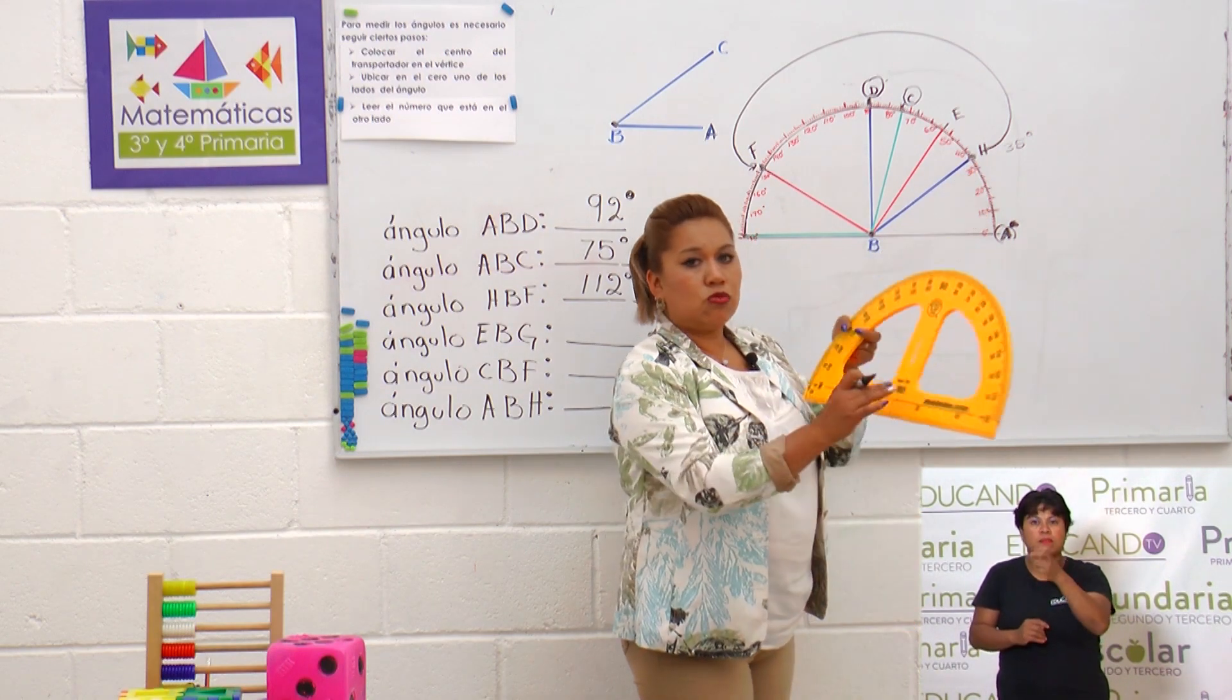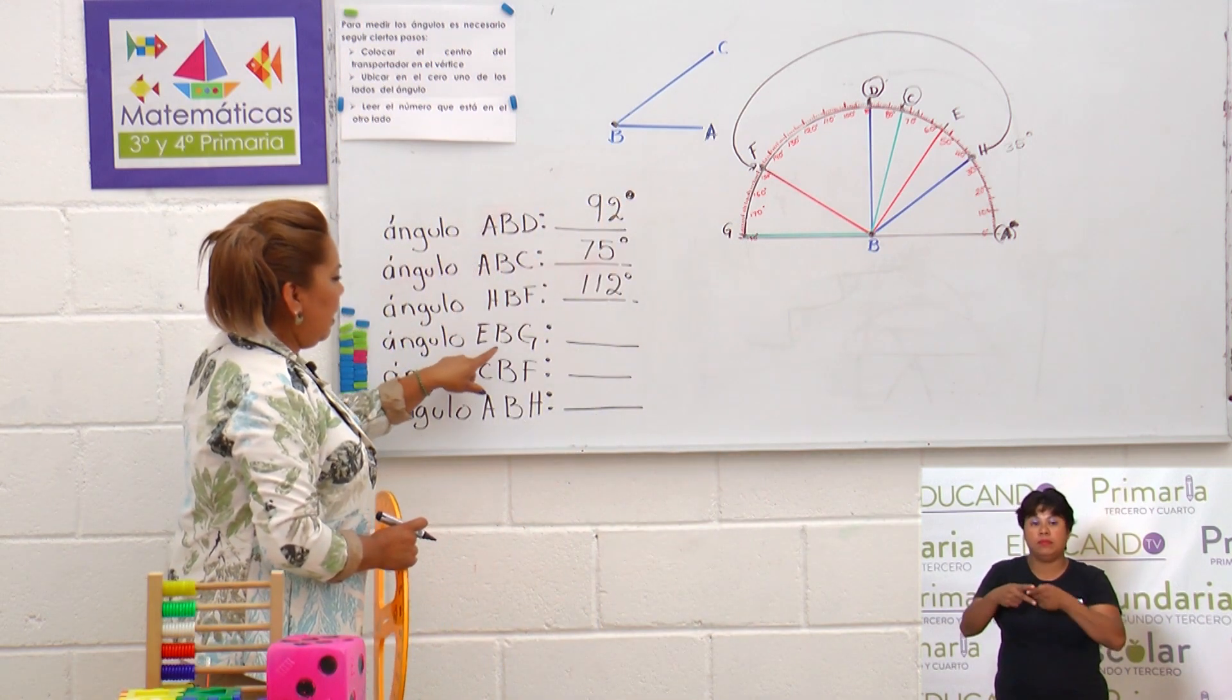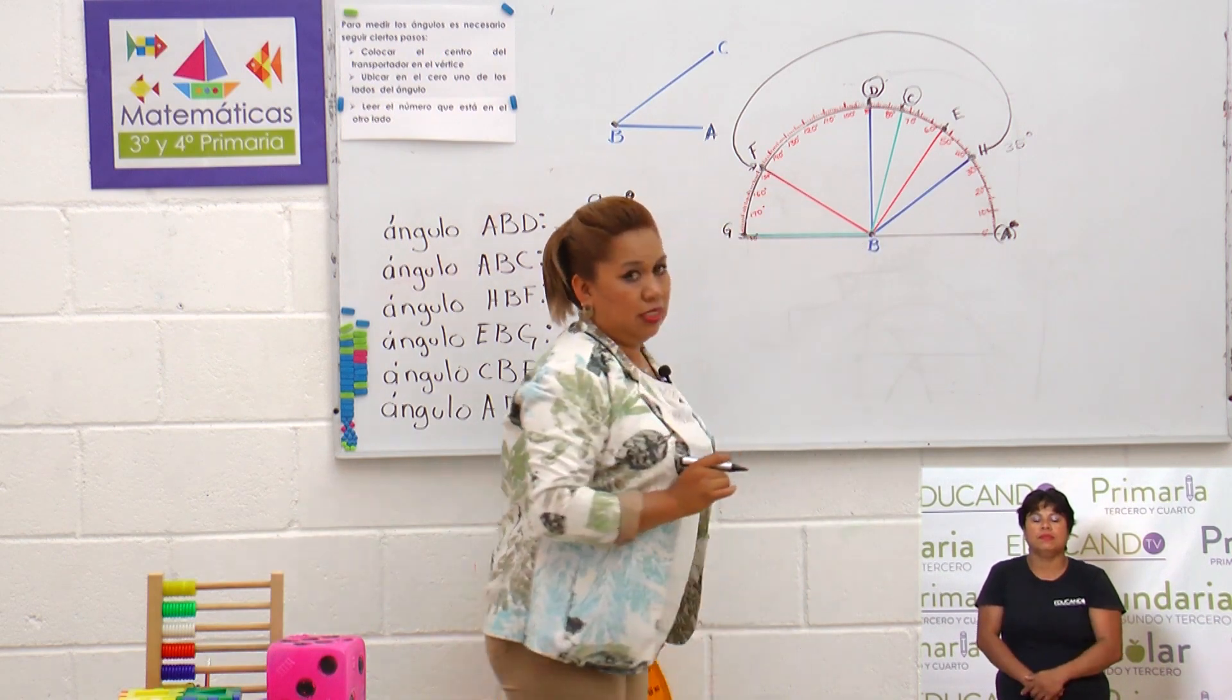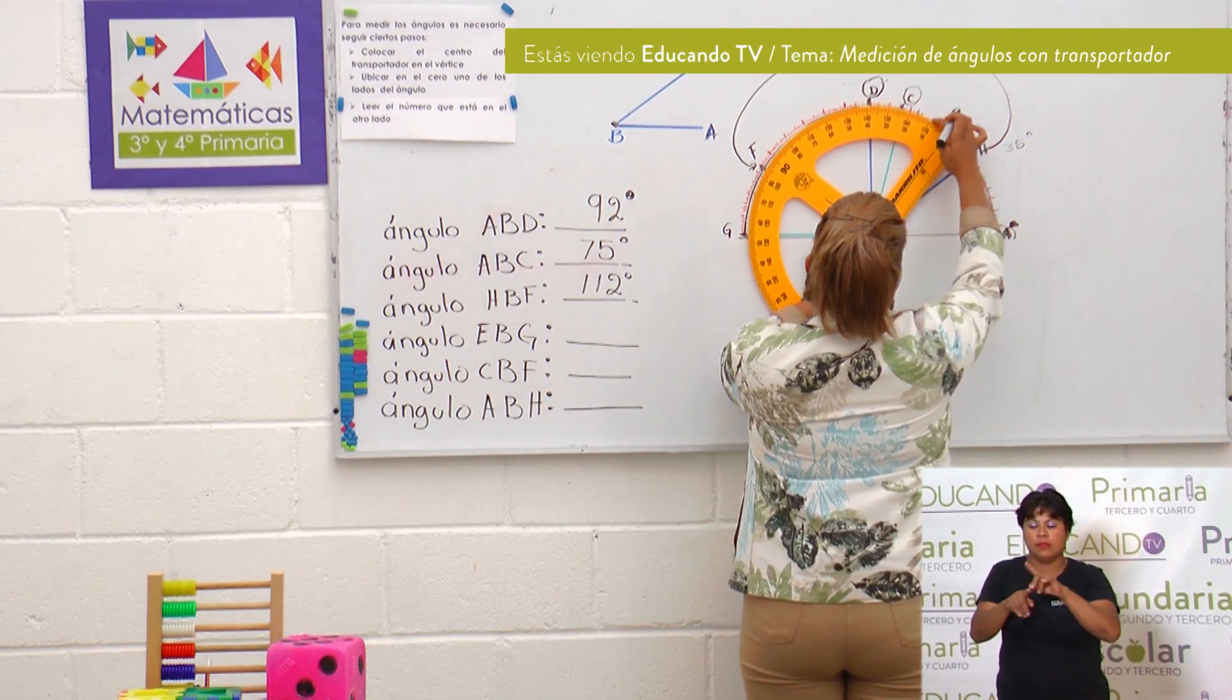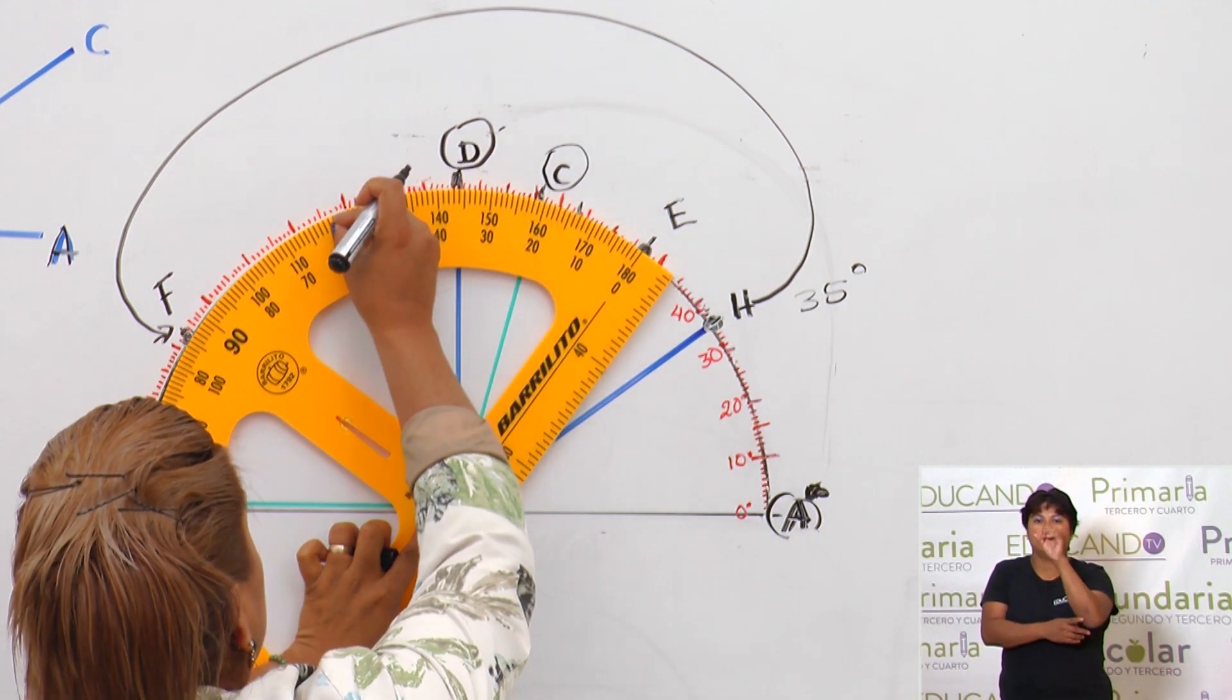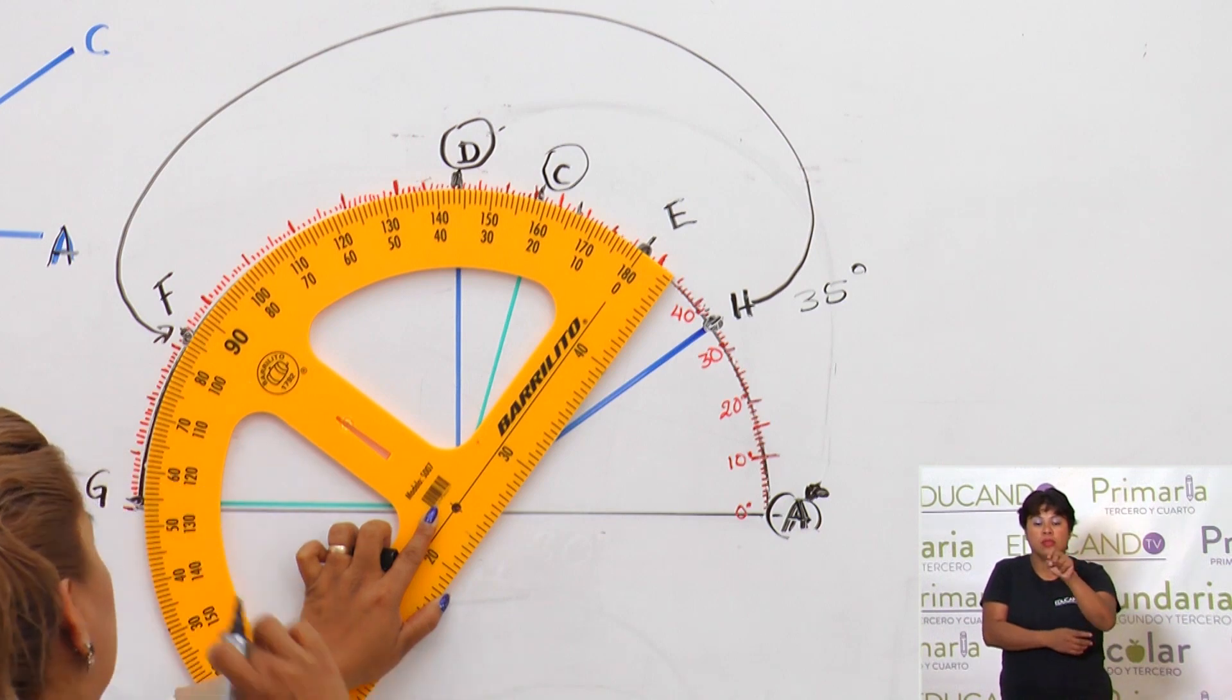Es muy muy muy importante que tú veas de dónde vas a partir para que puedas ir contando para llegar al otro punto que te están marcando. En este caso a lo mejor se te puede complicar un poco porque está partiendo no de un número entero. Pero precisamente para eso puedes usar el transportador porque siempre inicia en el punto cero. Muy bien. Ahora, ángulo E B G. Vamos a ubicarlo: E, B, G. Para que no nos confundamos vamos a poner el transportador en el vértice y el otro en el punto cero. Y ahora sí contamos: 10, 20, 30, 40, 50, 60, 70, 80, 90, 100, 110, 120, 126. Ese ángulo tiene 126 grados.